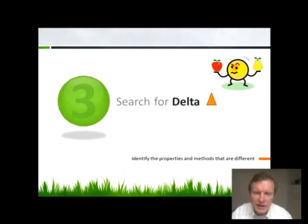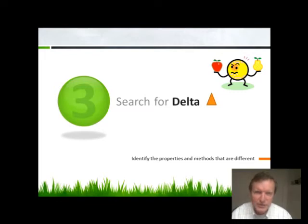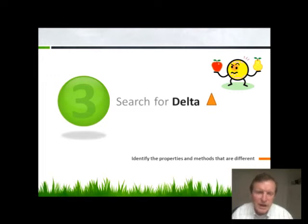Once we've got those two pieces of information — what the ideal is and what the actual is — we can then search for the differences between them. This helps us narrow down our focus so we don't have to worry about the whole program. We identify which static parts are changing: which data fields, which components on the screen, and which routines in the code behind. Then we also look at what logic is changing.